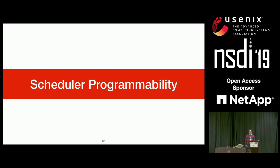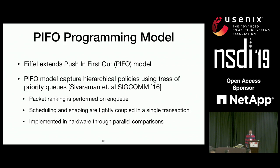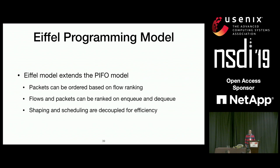The second interest in Eiffel was extending the expressiveness of programmable schedulers. We start from earlier work on the PIFO (Push-In, First-Out queues) programming model, presented by Sivaraman three years ago. PIFO represents policies as a hierarchy of priority queues where packets are ranked individually on enqueue. Scheduling and shaping are tightly coupled in the nodes of the hierarchy, and it was implemented in hardware, which limited expressiveness and scale. In Eiffel, we make three extensions: allowing packets to be ordered based on flow rank in addition to individual packet rank; allowing ranking on both enqueue and dequeue; and decoupling shaping and scheduling.